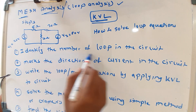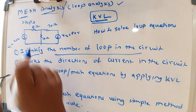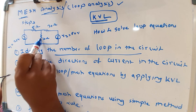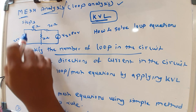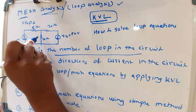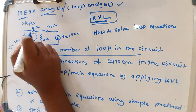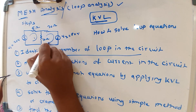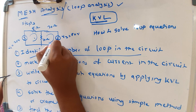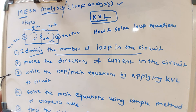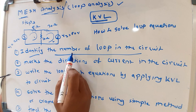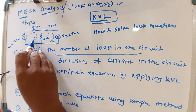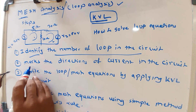To identify the number of loops, check each branch. One branch, another branch, and the ground branch form one square loop — that is the first loop. Similarly, the adjacent section forms the second loop. So there are two loops in this circuit.